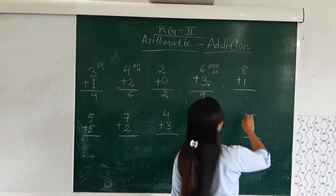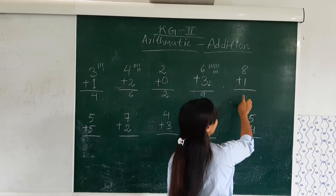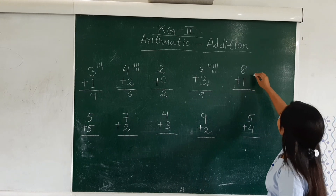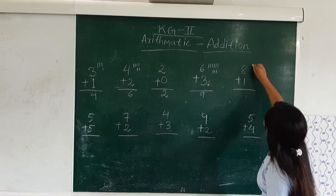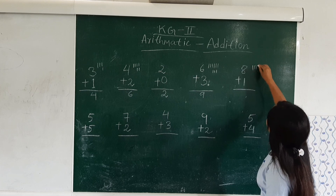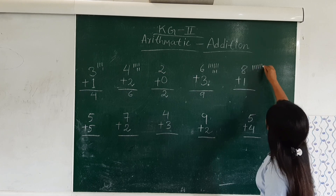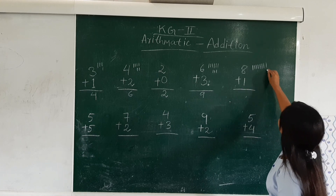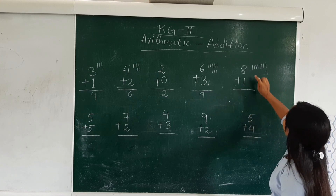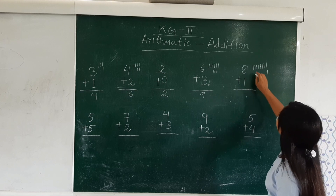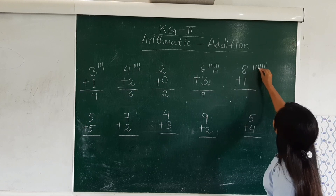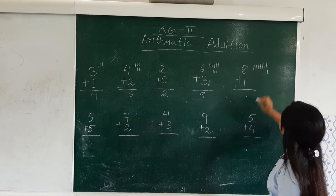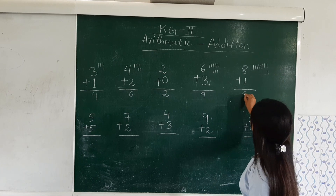Now the next one: 8 plus 1. Here we have 8, so we mark 8 times: 1, 2, 3, 4, 5, 6, 7, 8. Here we have 1, so we mark 1. Now we will count all together: 1, 2, 3, 4, 5, 6, 7, 8, 9. So we have the result 9.